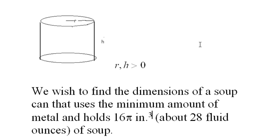Okay, so we're trying to find the optimal amount of metal, which happens to be a minimum in this case. We want to use as little metal as possible, so we can save money. And the soup can has a height h and a radius of the top and bottom r. And r and h are greater than 0.